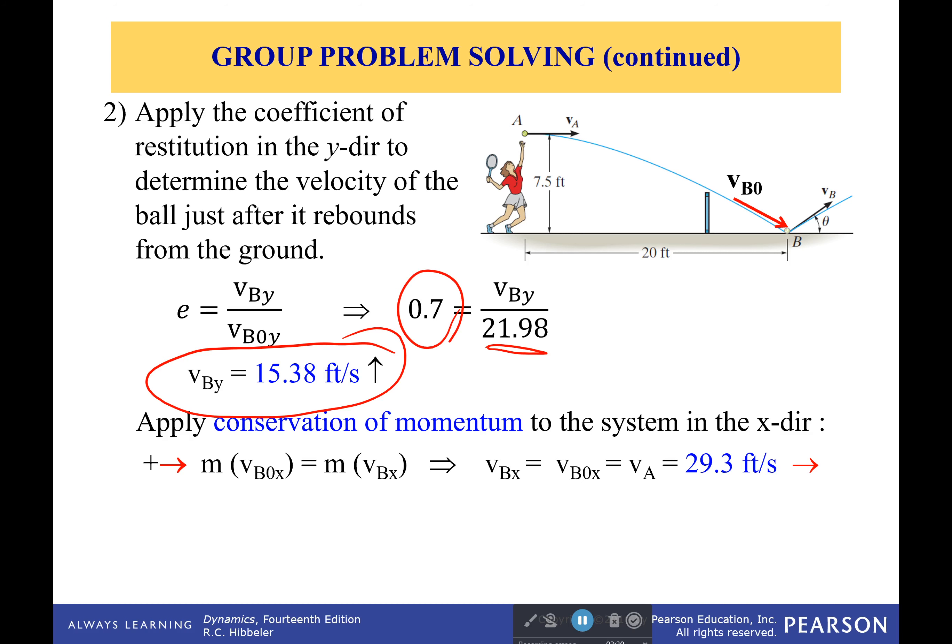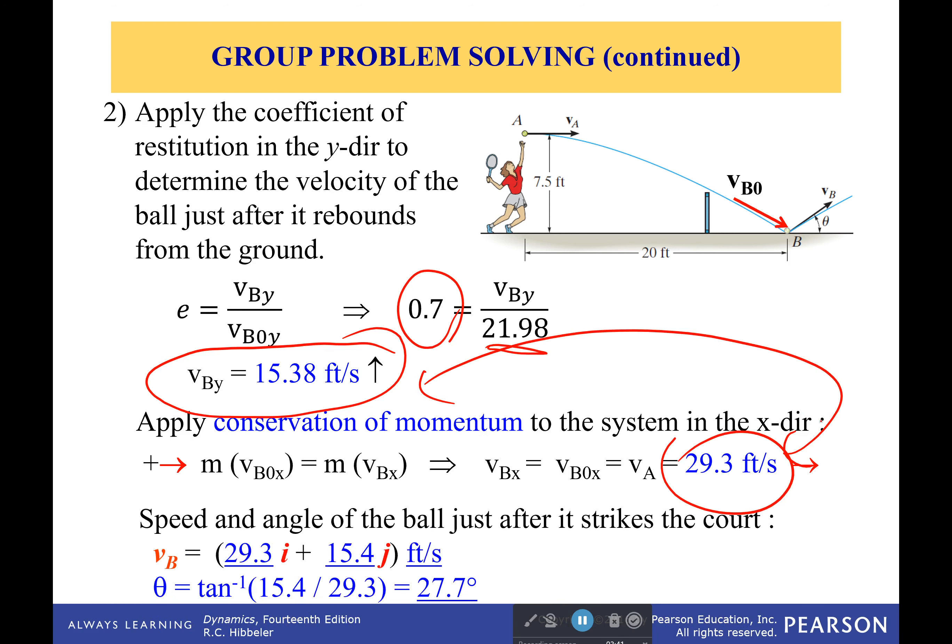Just use your judgment. Be very careful. Be consistent. And so what we get is that the velocity afterwards is 29.3 feet per second in the x direction. We have the velocity in the y direction. We have the velocity in the x direction. If we want to, we can take the magnitude and calculate the angle.